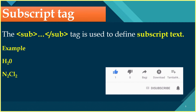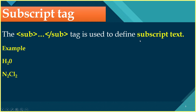Moving on to the subscript tag. What is the use of the subscript tag? The subscript tag is used to define subscript text, and the subscript tag comes in pairs, where 'sub' stands for subscript. It has an opening tag and a closing tag. Here is an example: H₂ — it means suffix 2. For N₂Cl₂, where N has suffix 2 and Cl has suffix 2. If you want to use a suffix and write it in HTML, then you want to use the subscript tag.